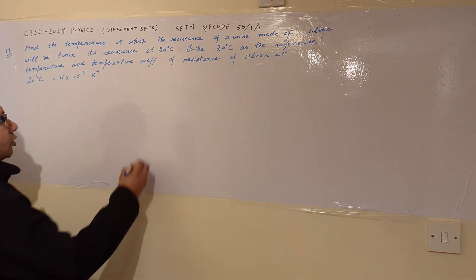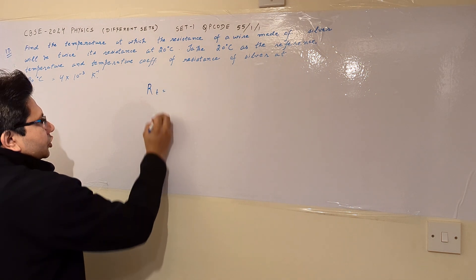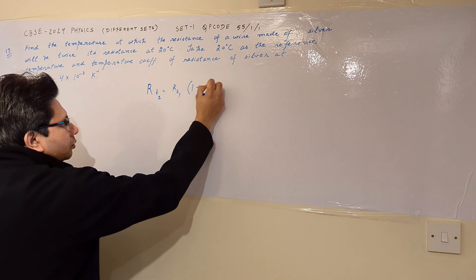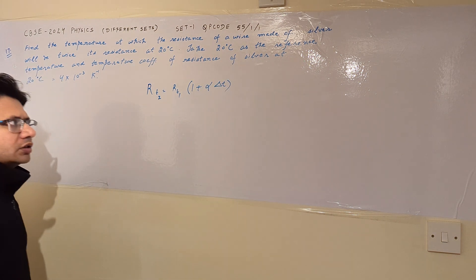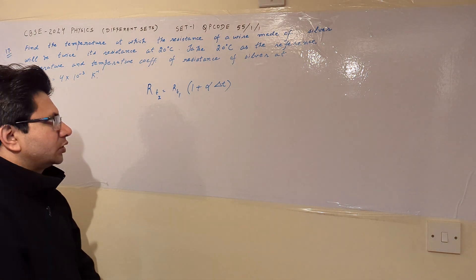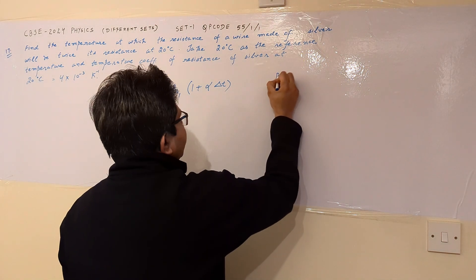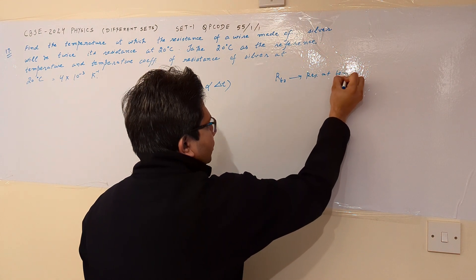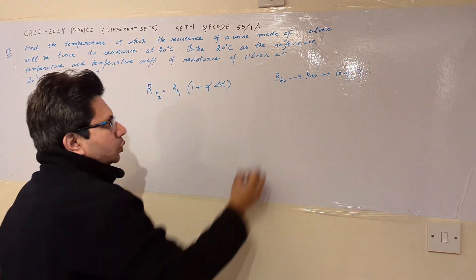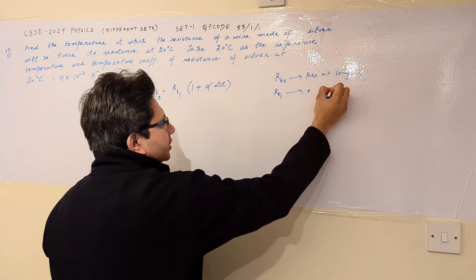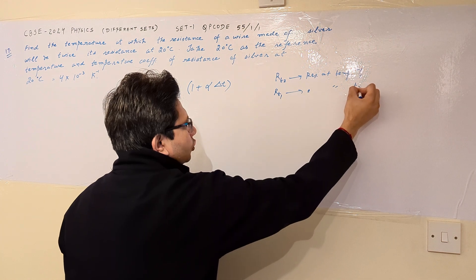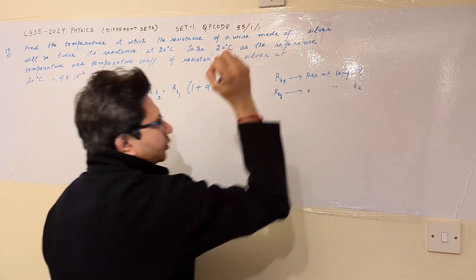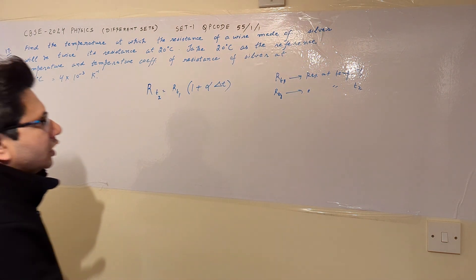To solve this problem, we use the relationship: RT2 equals RT1 times (1 plus alpha times delta T). This is the particular formula used. Here, RT1 is the resistance at temperature T1, and RT2 is the resistance at temperature T2.